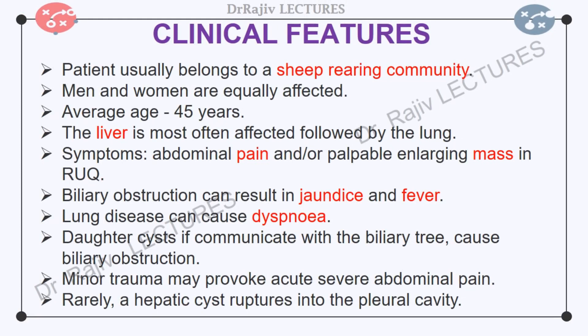The parasite can invade virtually every organ in the body and therefore its clinical presentation may be variable. The clinician should always keep a high index of suspicion. The usual clinical presentation is a painful enlarging lump arising from the liver in a farmer patient. Anaphylactic shock due to rupture of the hydatid cyst is the emergency presentation. Men and women are equally affected at an average age of about 45 years. Symptomatic patients often present with abdominal pain or a palpable enlarging mass in the right upper quadrant. Compression of a bile duct or leakage of cyst fluid into the biliary tree may mimic recurrent cholelithiasis, and biliary obstruction can result in jaundice.